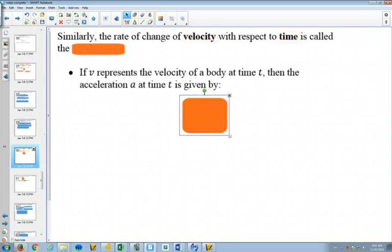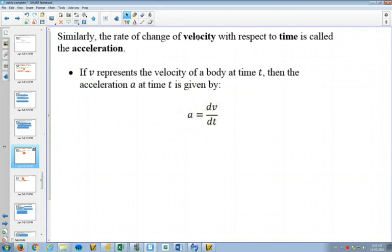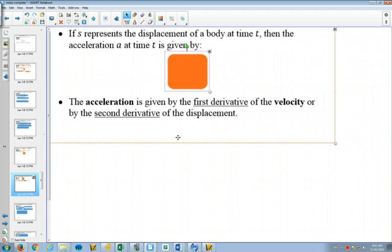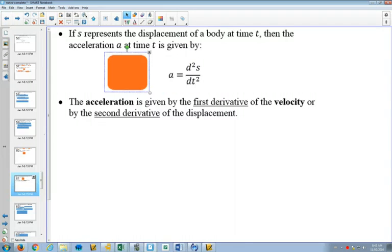And as we talked about already, if we do velocity with respect to time, that is acceleration. So our acceleration is the derivative of velocity. It would also be the second derivative of our displacement formula. And so that's what we have here as far as the formula goes. That acceleration is the second derivative of displacement.